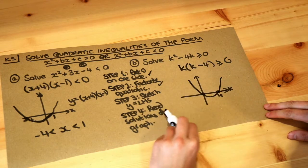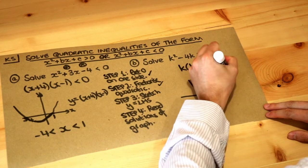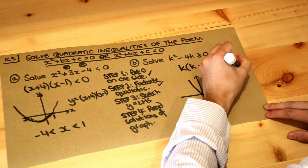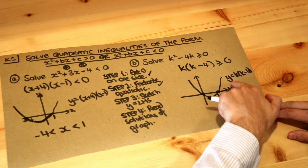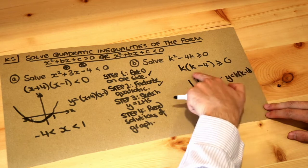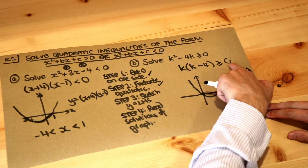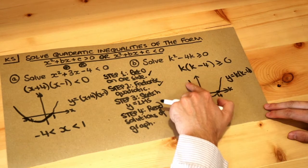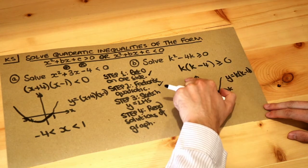Now step four is to read the solutions off the graph. Now we've drawn y equals k brackets k minus four. So if y is equal to k brackets k minus four, we're saying that y is greater or equal to zero. Where on this graph is y greater or equal to zero?